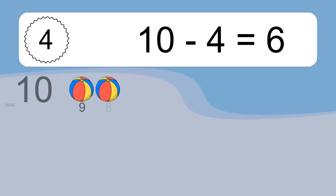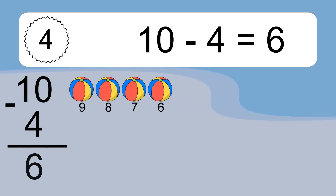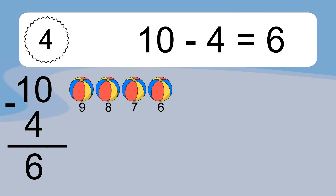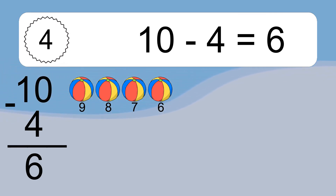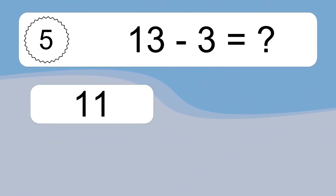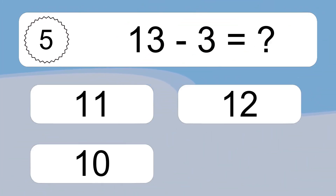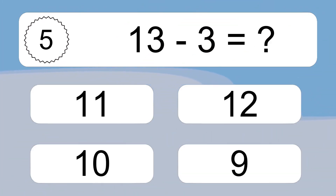10 minus 4 equals what? 10 minus 4 equals 6. Let's count it: 9, 8, 7, 6.